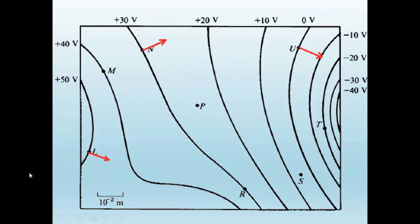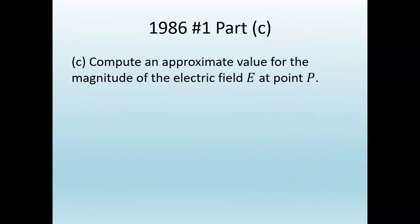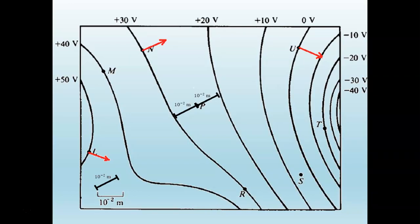Here is the picture again showing an enlarged view. Indeed, the gradient here is very sharp, and that's where you have the largest electric field. Moving on to Part C: computing an approximate value for the magnitude of the electric field E at point P. We can make a map using the fact that the electric field vector equals the negative gradient of the electric potential.